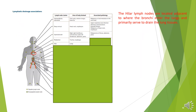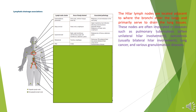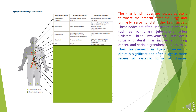Next is hilar lymph nodes. The hilar lymph nodes are located adjacent to where the bronchi enter the lungs and primarily serve to drain the lung tissues. These nodes are often implicated in pulmonary tuberculosis — often with unilateral hilar involvement — sarcoidosis, usually with bilateral hilar involvement, lung cancer, and various granulomatous diseases.